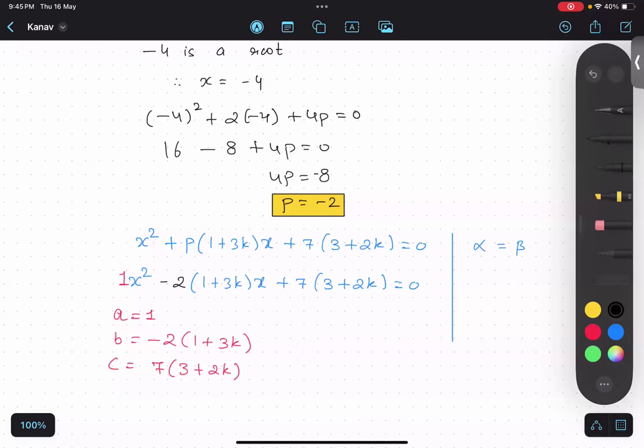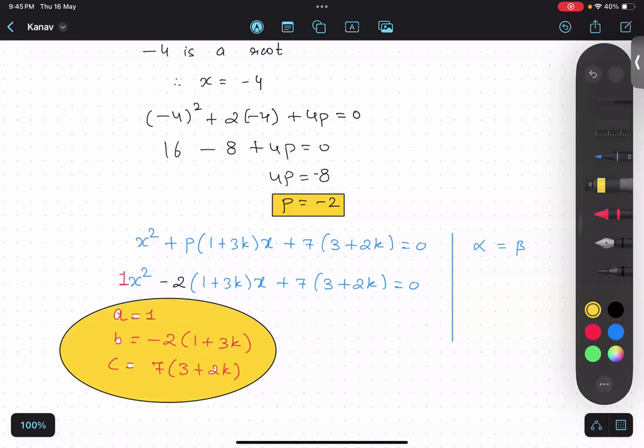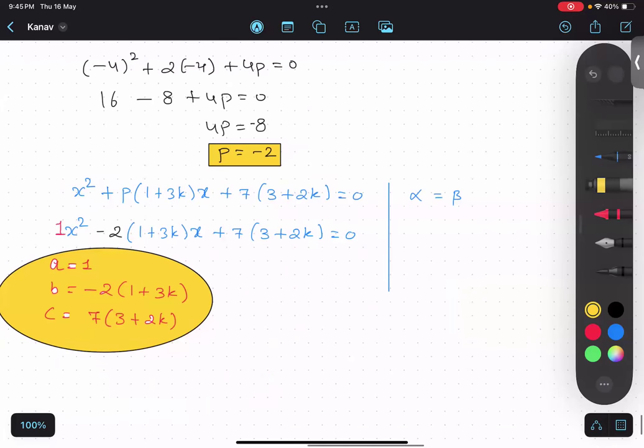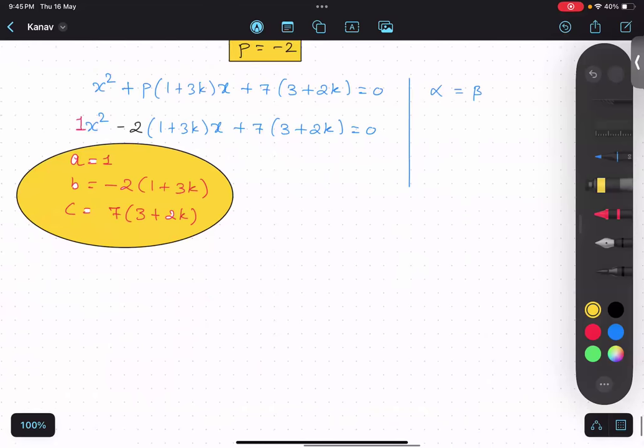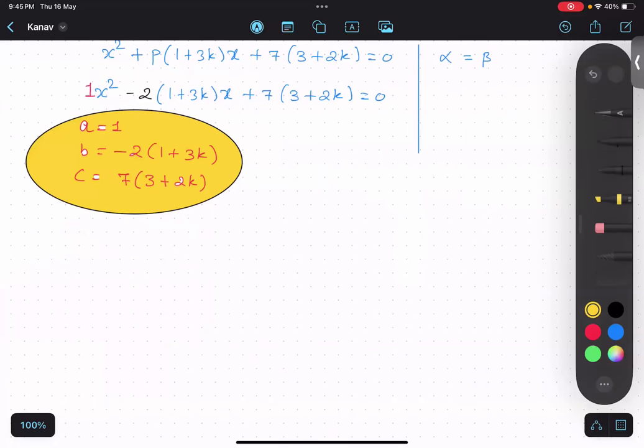Now this information becomes very important for us. So we will be using this information. And as we know alpha equals to beta. So I'm going to find sum and product as we have done already so many times.